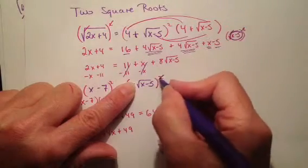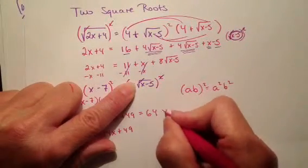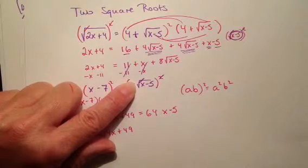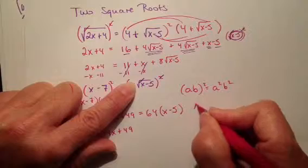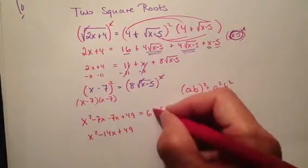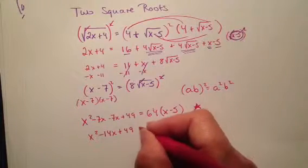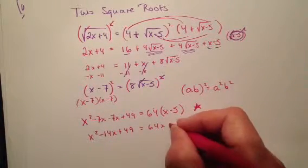Well, don't they cancel each other out? So I just end up with the guts. Remember I talked about the guts of this square root? So that's just x minus 5. But please put it in parentheses. Really important point right there. Put it in parentheses because I need to distribute that 64. So this is going to become 64x minus 320.